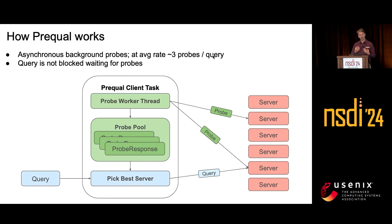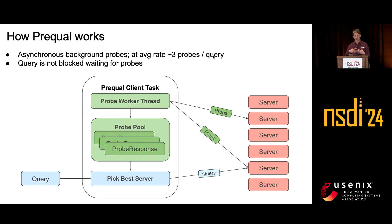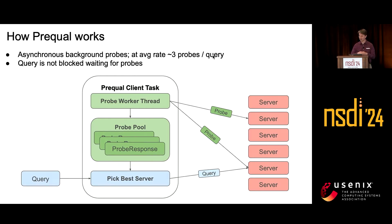We don't actually wait for these probes to complete. It's not that the query arrives and we probe the servers and then make a decision. One of the innovations here is that we continuously probe in the background, keeping a pool of available probes. When a query comes, we immediately assign it to a server based on our pool of available probes. Typically there are about three probes per query sent, triggered whenever a query comes on another thread, so it's not blocking for that query.